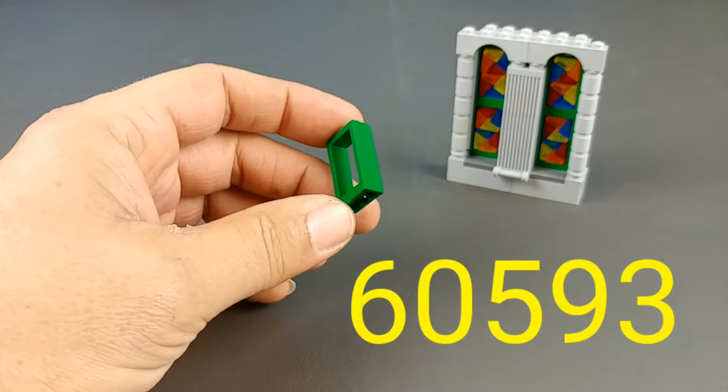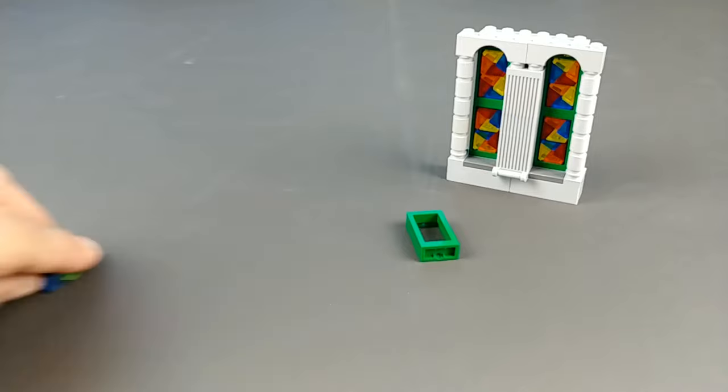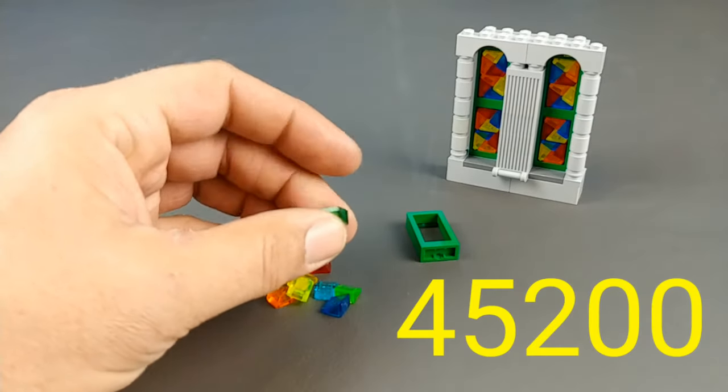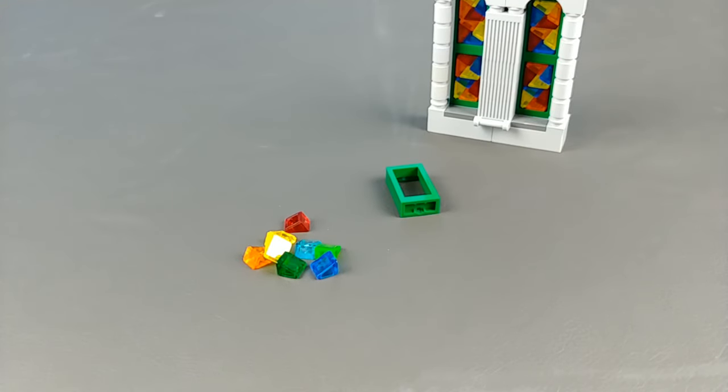The first part you're gonna need is 1x2x3 window frames and you're going to need a whole bunch of translucent in whatever color you want cheese wedge pieces. Now let's get started with the build.